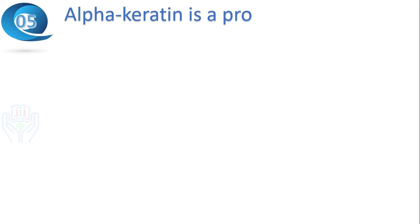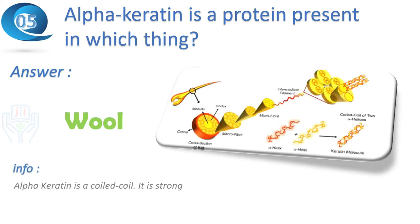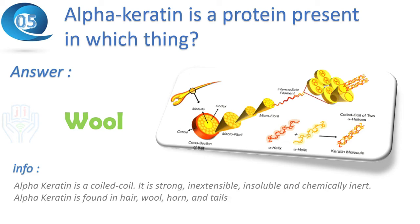Next question: alpha keratin is a protein present in which thing? Answer: wool. It is a coiled-coil structure. It is strong, inextensible, insoluble and chemically inert. It is found in hair, wool, horn and nails.